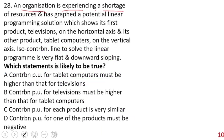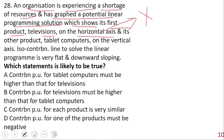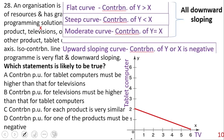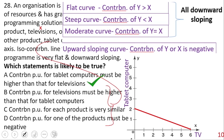Question: an organization has television on the horizontal axis and tablet computers on the vertical axis. The iso-contribution line is very flat and downward sloping. From our summary, a flat downward sloping curve means Y's contribution is greater than X's — tablet computers contribute more than television. The correct statement is that the contribution for tablet computers must be higher than that for television — option B is correct.